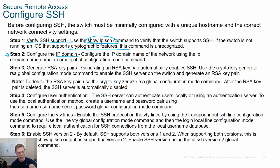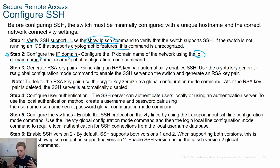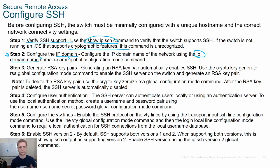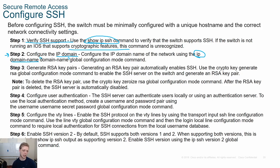Next, configure the IP domain name using the command 'ip domain-name' followed by your domain — for example, cisco.com. In a production environment, you'd use your actual company's domain name, such as hyperconverged.com or microsoft.com. In labs, the domain name will usually be specified, like cisco.com or ccna-lab.com.